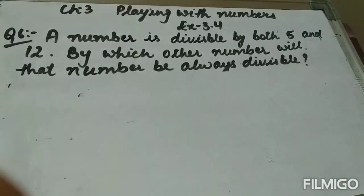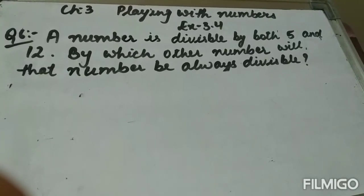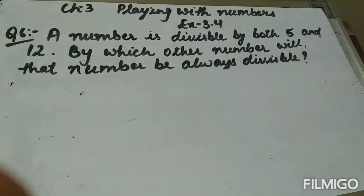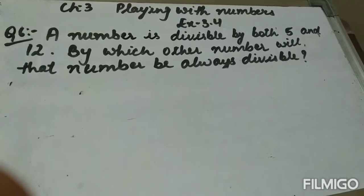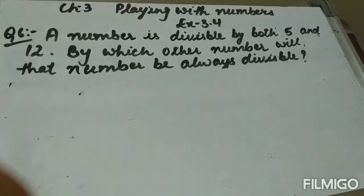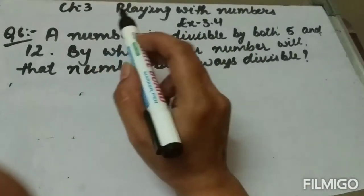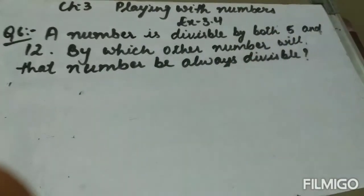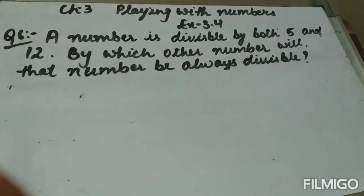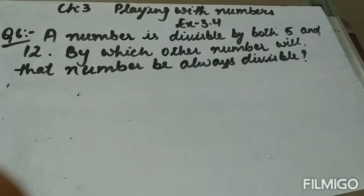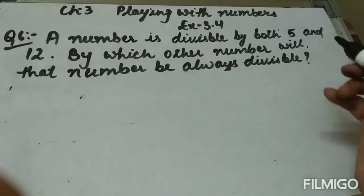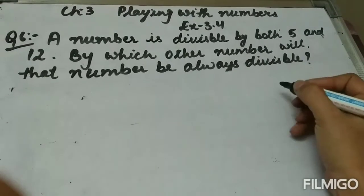Hello everyone, I am Prabhjot Kaur and today we will do question number six and seventh of exercise 3.4 of chapter third, Playing with Numbers. Question six: a number is divisible by both 5 and 12. By which other number will that number always be divisible?